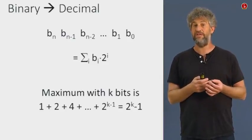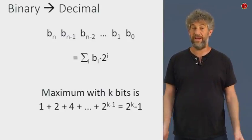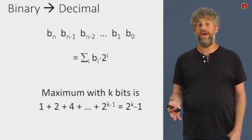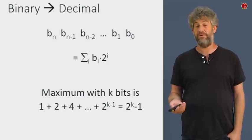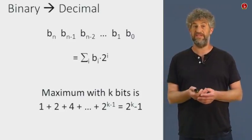So we have the sum of 1 plus 2 plus 4, all the way to 2 to the k minus 1. All together, we have 2 to the k minus 1. And that's the range of numbers we can represent with k bits.